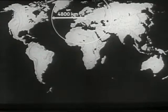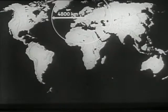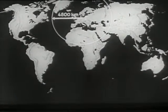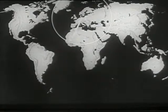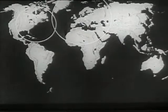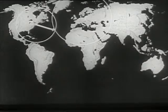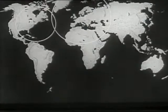Thus the scientist draws a circle on the globe to show the distance as measured at his station. A second station can do the same. A third station drawing a similar circle helps to pinpoint the exact location of the earthquake.